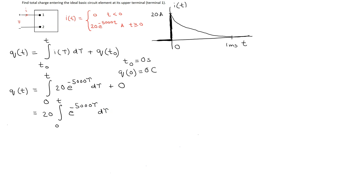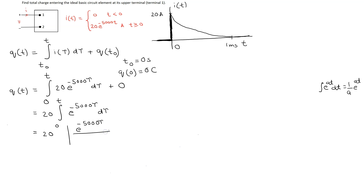This integration can be easily solved using the identity: the integral of e^(at) dt equals (1/a)e^(at). In our case, a is minus 5000, so we apply this identity. We get e^(-5000τ) divided by a, which is minus 5000, and we substitute the limits from 0 to t.